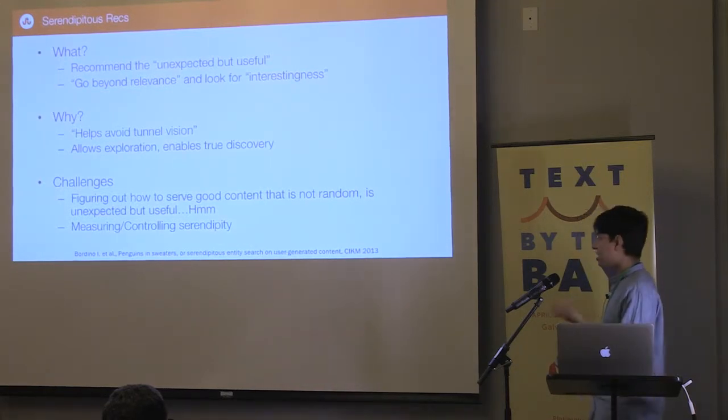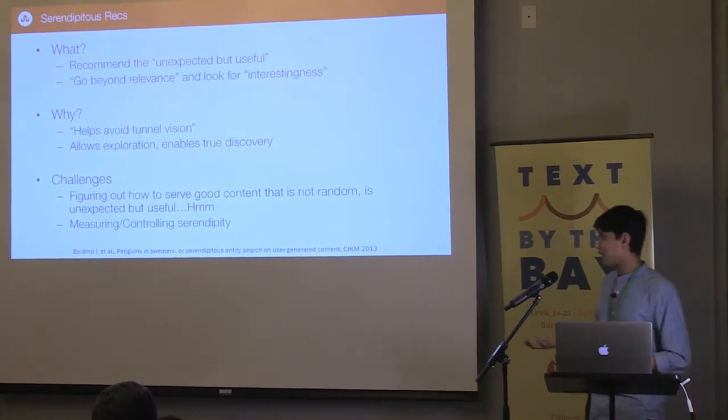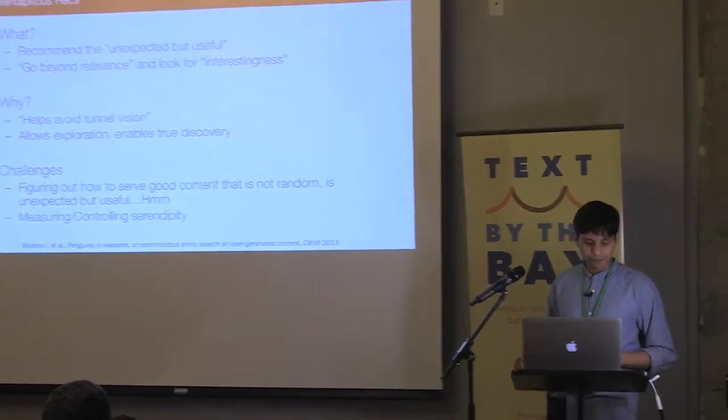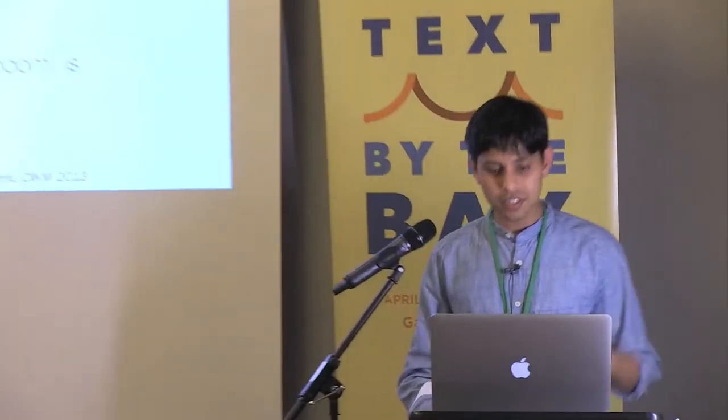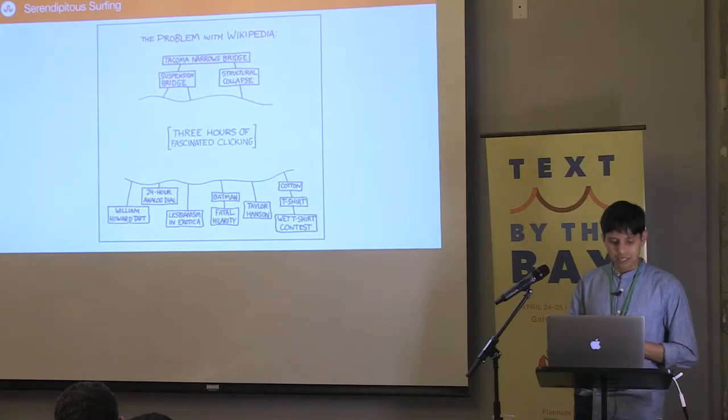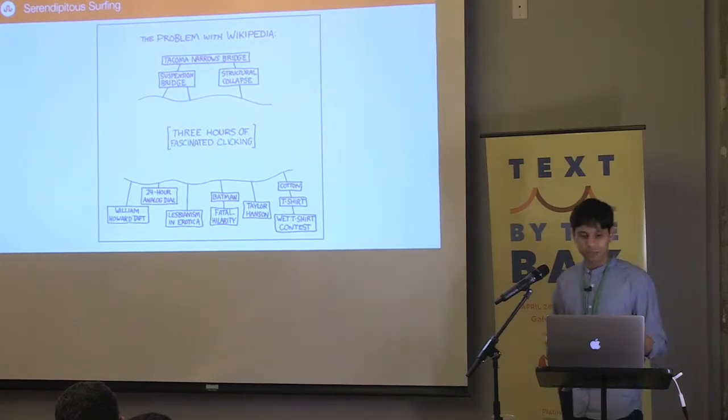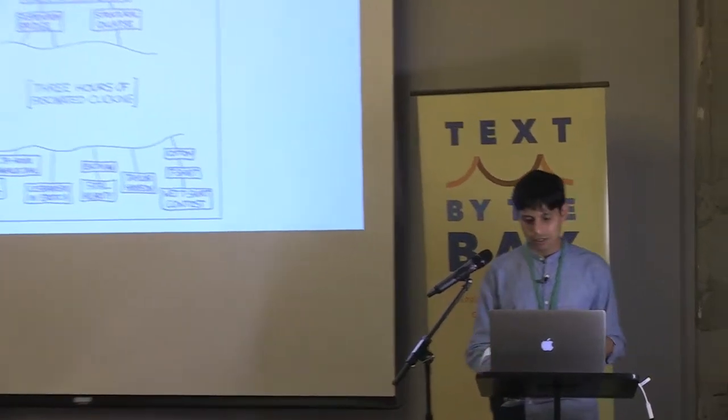But the challenges are how to serve good content that is not random. It's unexpected but useful. And how do I measure or control serendipity? One of the things that we did was there's something close to this. To give you a better idea, I think we've all done this. It would be awesome if you can do whatever you do in Wikipedia on the entire internet.